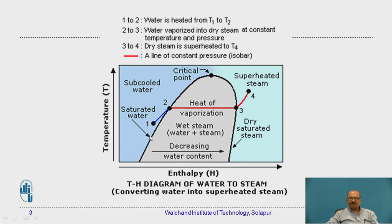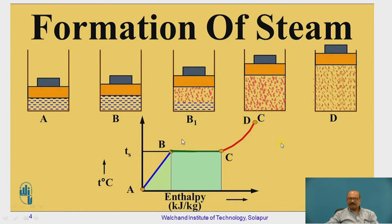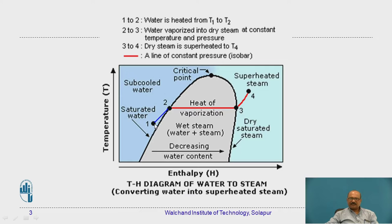This is a continuation of the previous graph where we discussed the formation of steam. In that lecture, this particular portion was represented as ABCD. So it is just a continuation — this is ABCD — the same graph. On this side, the location up to this particular point is the water, that is the saturation temperature of water, and the other side is the superheated side. Here, 1 to 2 represents water being heated from T1 to T2 temperature.